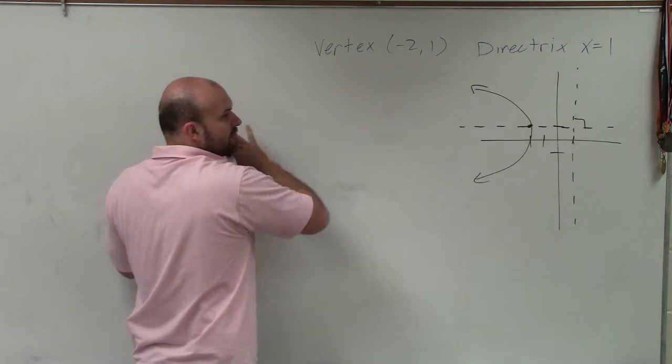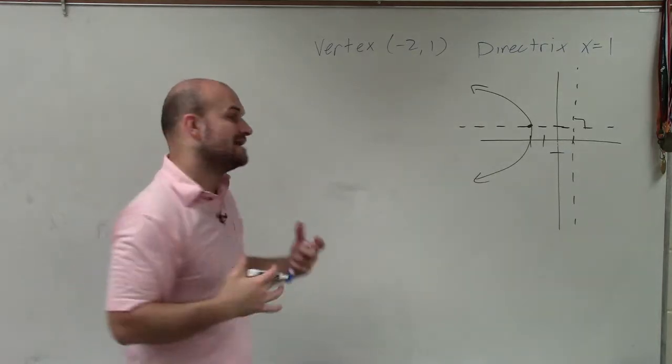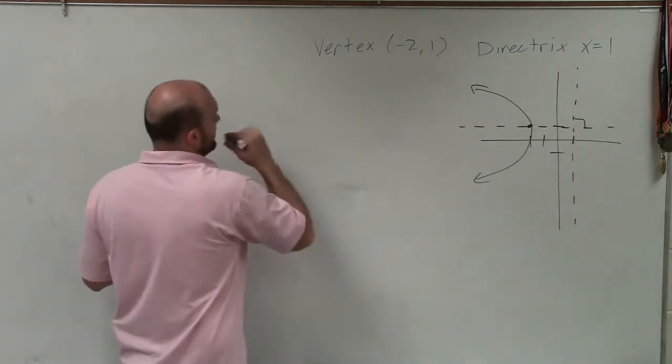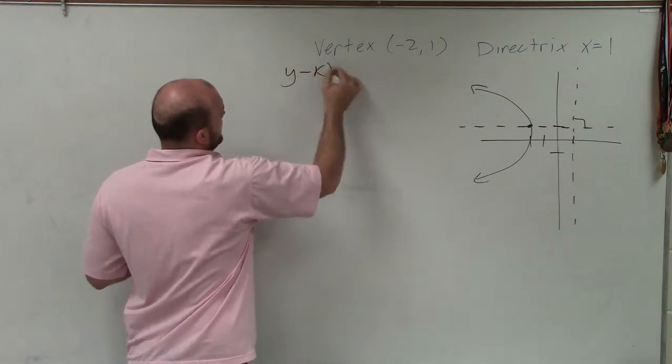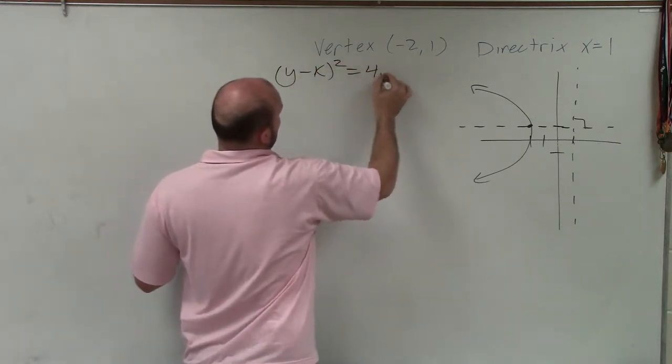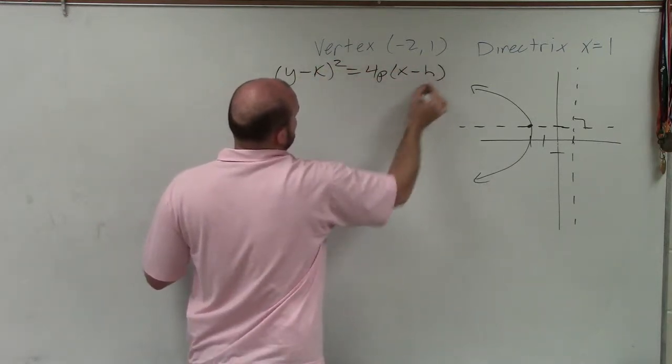Now let's write the standard equation for a parabola that has a horizontal axis of symmetry. And that's going to look like y minus k squared equals 4p times x minus h.